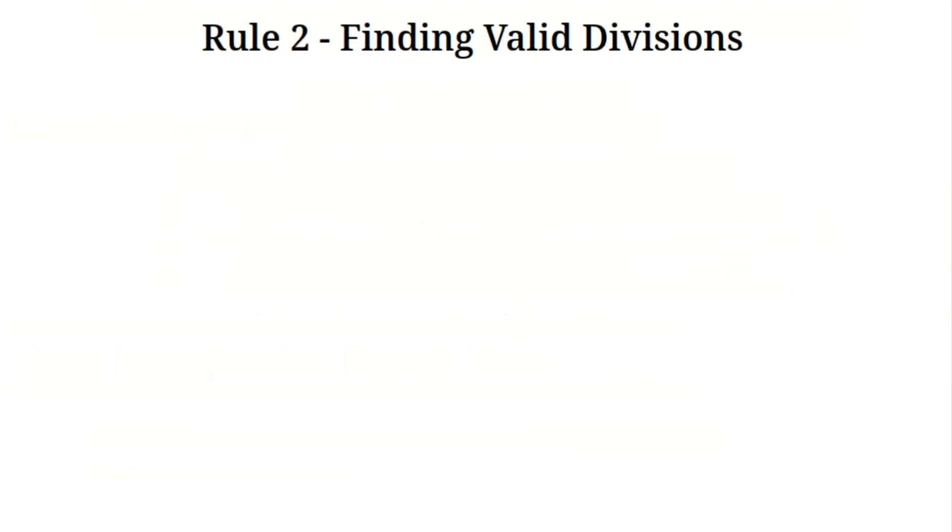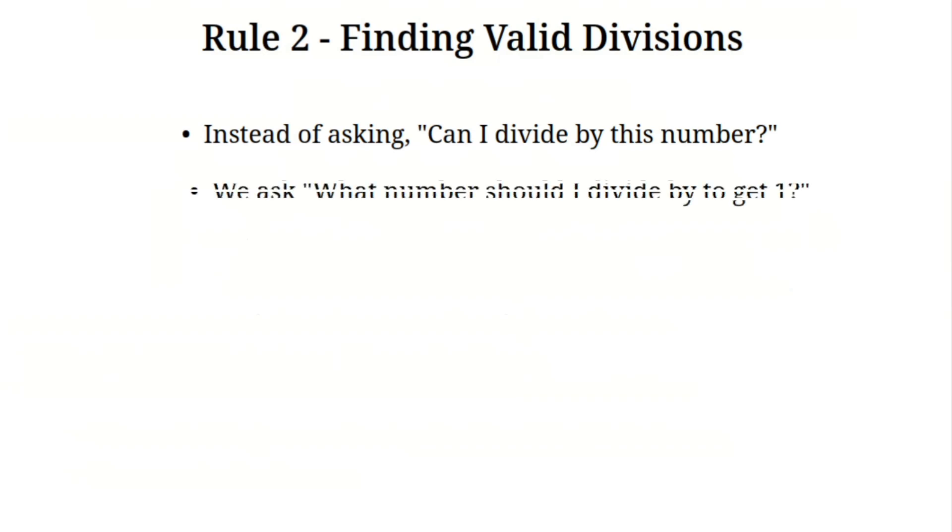Rule two, finding valid divisions. Since dividing a number by itself gives zero, we need another way to divide numbers while keeping equations true. Instead of asking, can I divide by this number? We ask, what number should I divide by to get one? For example, in ZMS, if we divide three by two, we actually get one. So if we need to divide both sides of an equation by three, we don't divide by three directly. Instead, we divide by two because that's what gives us one. This allows us to simplify equations correctly without needing a modular inverse.